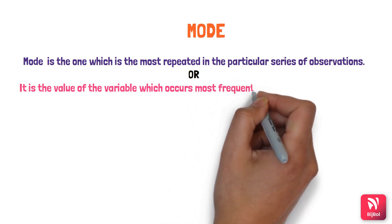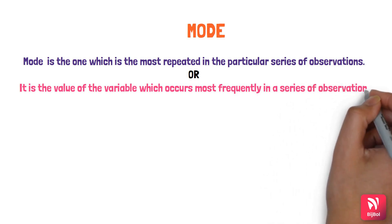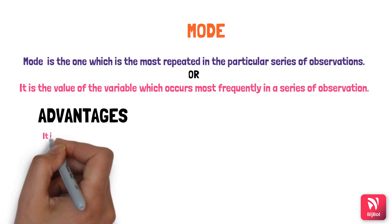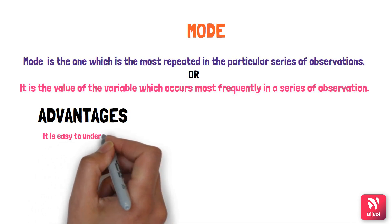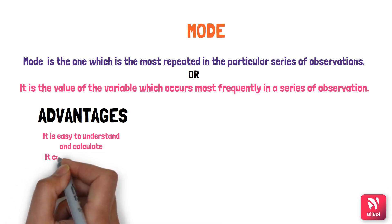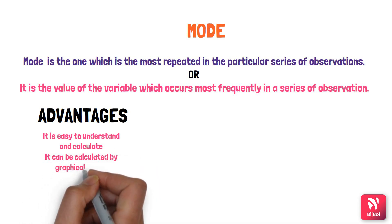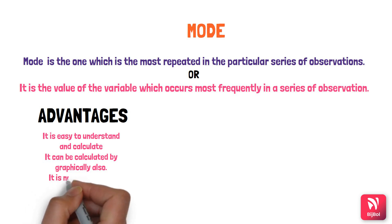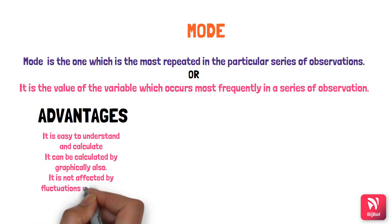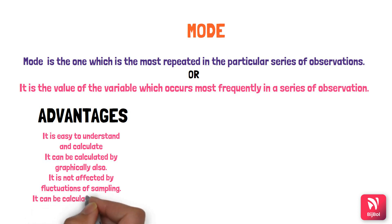The advantages of mode are that it is easy to understand and calculate. It can also be calculated graphically, not just by arithmetic means. It is not affected by fluctuations of sampling, and it can be calculated from both qualitative and quantitative data.